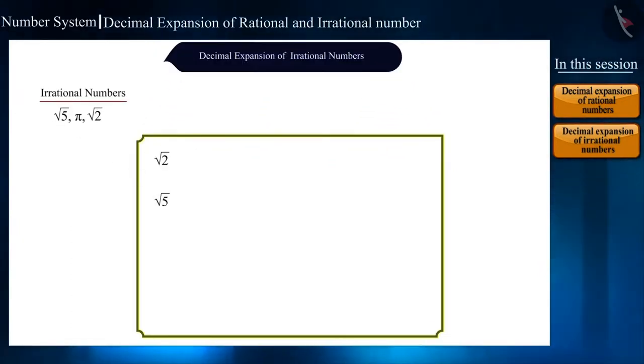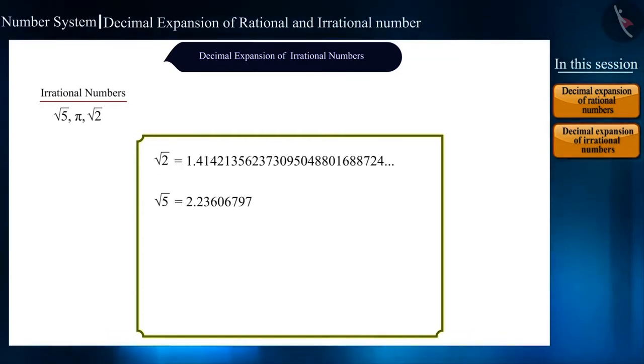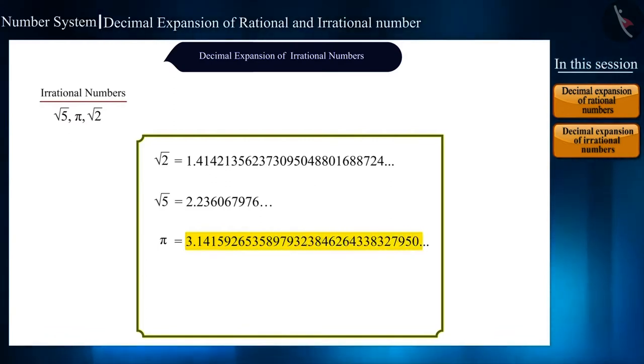The decimal expansion of root 2 and root 5 is as follows. If you look at them carefully, the numbers are neither being repeated here, nor are they ending. Likewise, we can find many irrational numbers and write their decimal expansion. You must be familiar with pi. Its decimal expansion is also like this. Here also, the numbers are neither getting repeated nor are they ending.